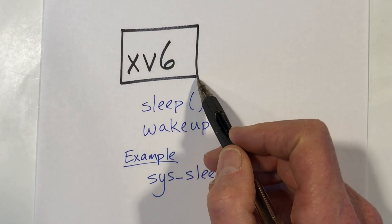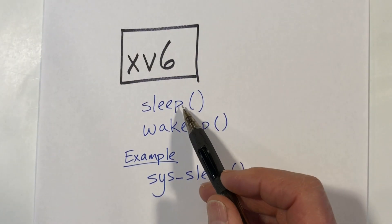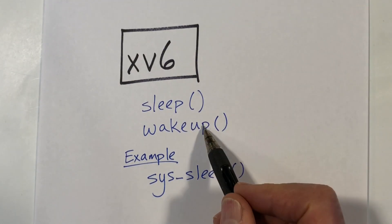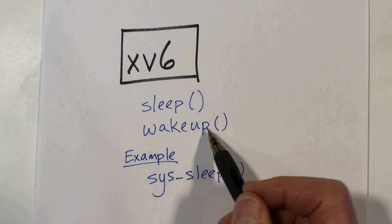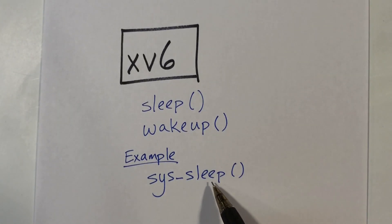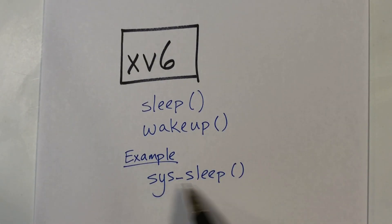This video is part of a series on the XV6 Operating System Kernel. In this video I'm going to talk about the sleep and wakeup functions. I will use as an example the system call sleep, which is dealt with in this function here.